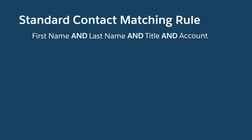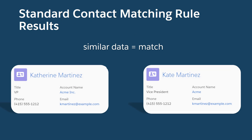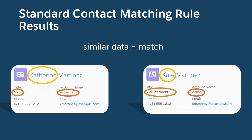Let's look up close at a piece of the equation in the standard contact matching rule and see what duplicates it catches. Let's say your data includes these two contact records. The equation identifies them as duplicates because on each field, the matching criteria identify strings that aren't identical, just similar. This fuzzy matching method is based on industry standard algorithms.